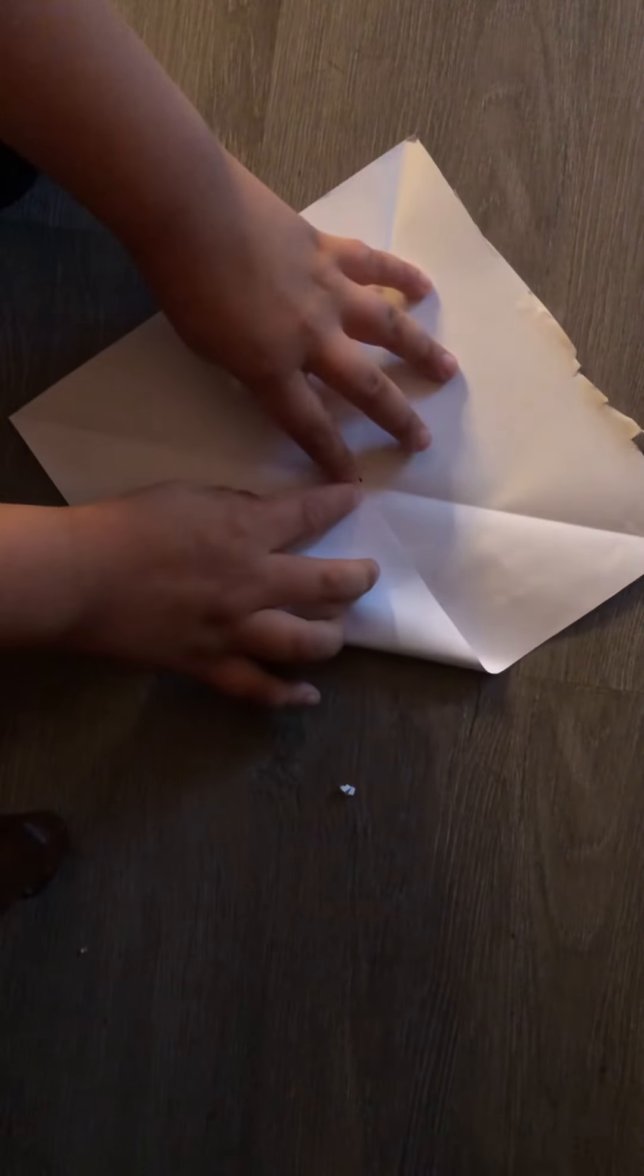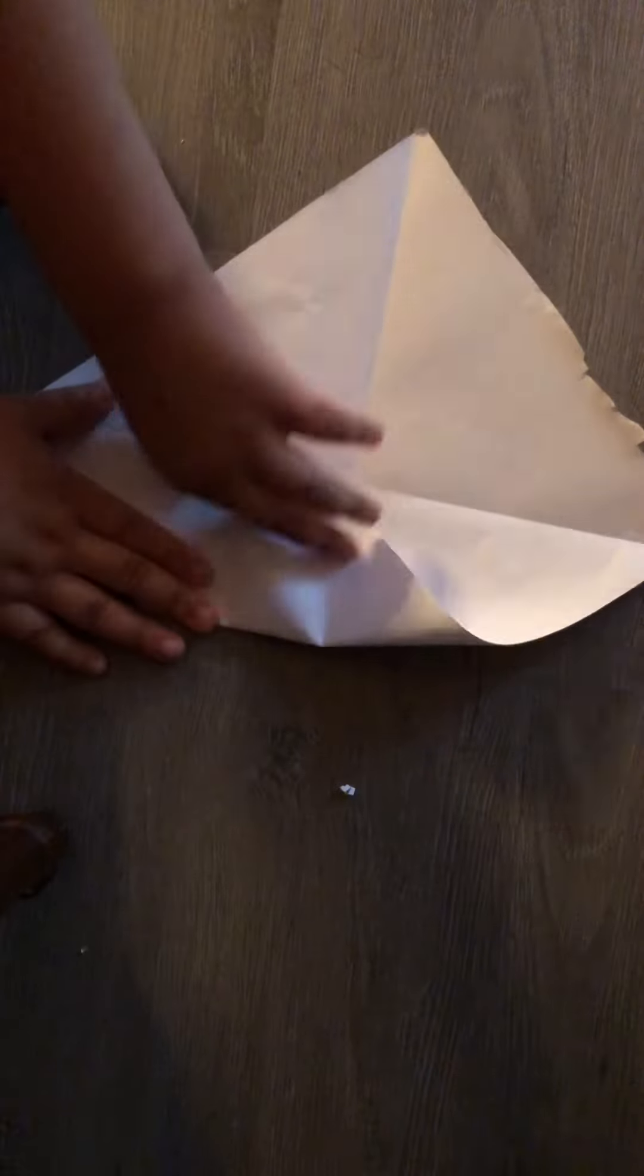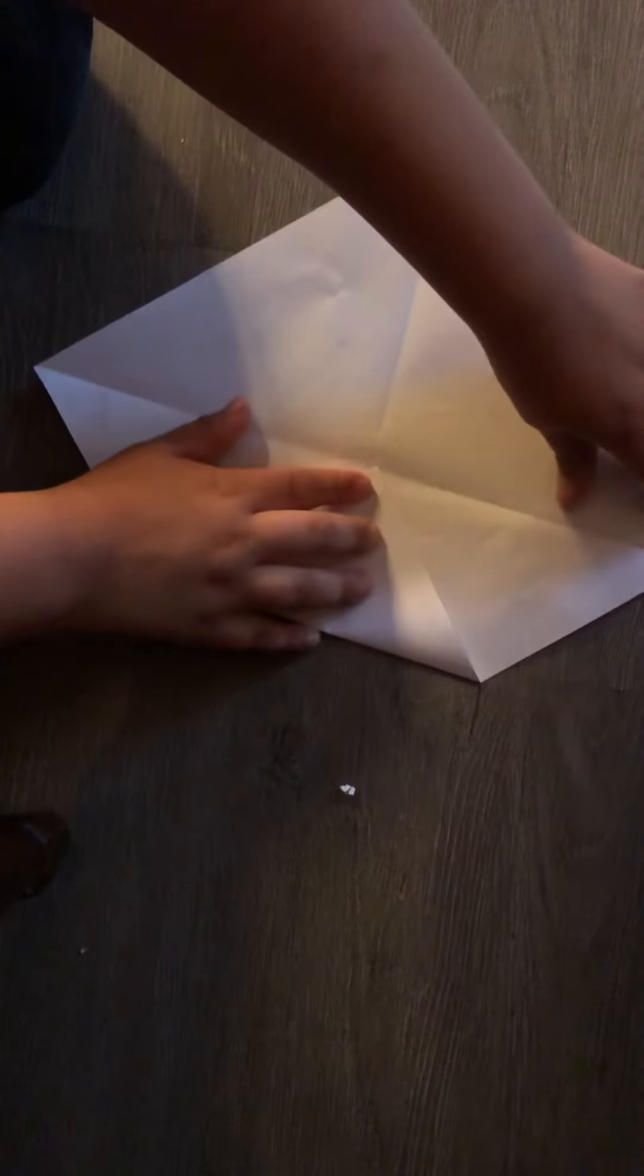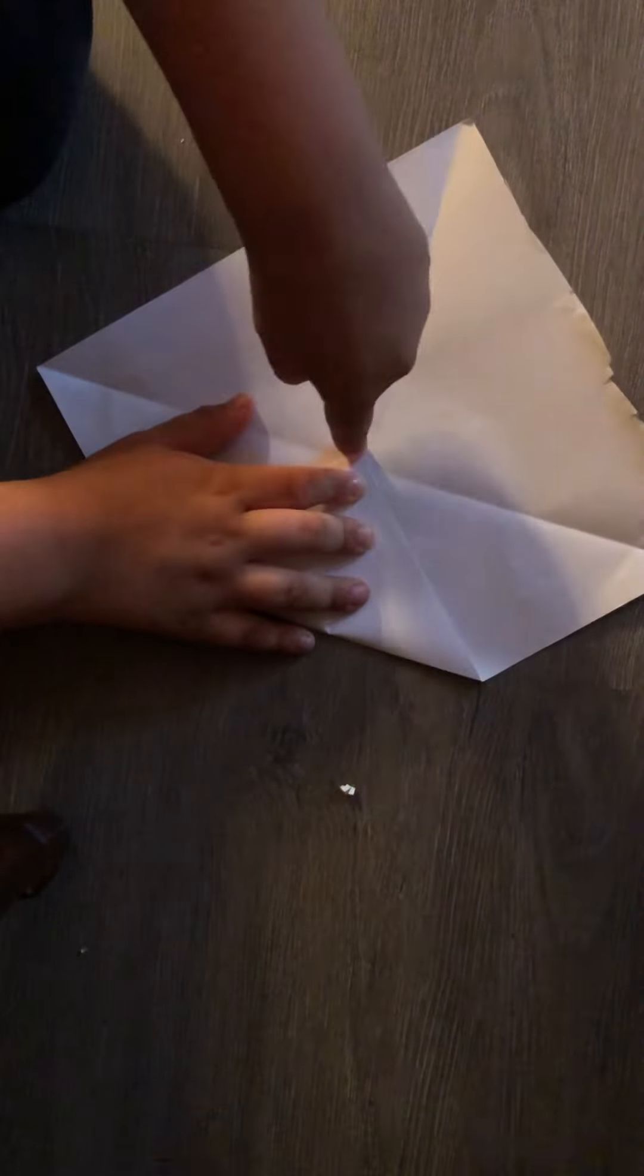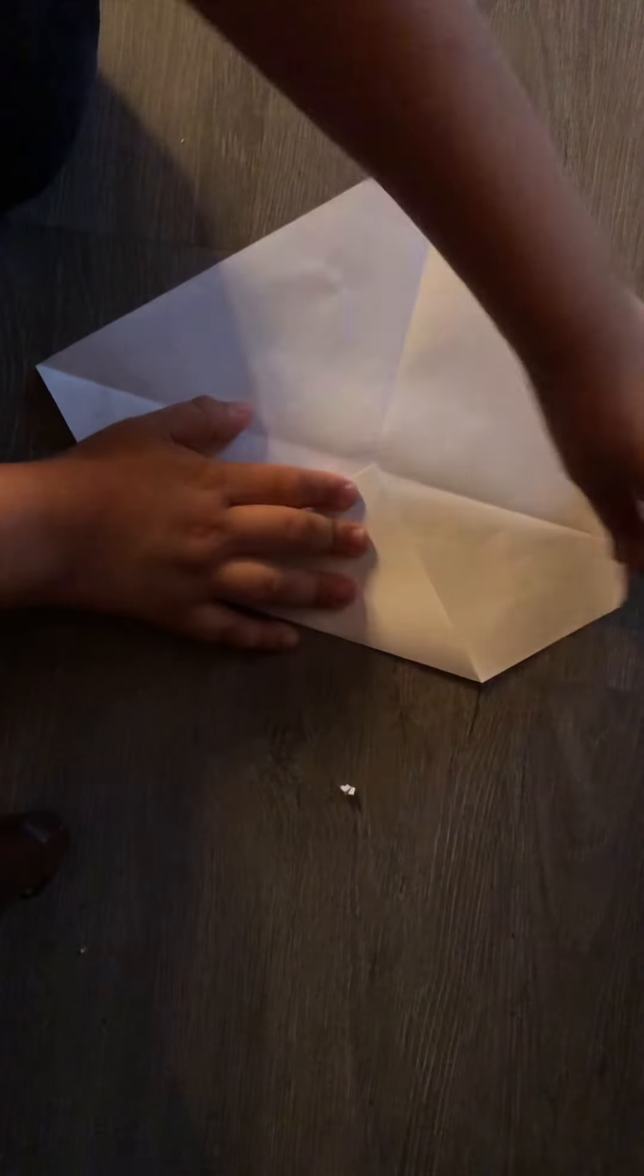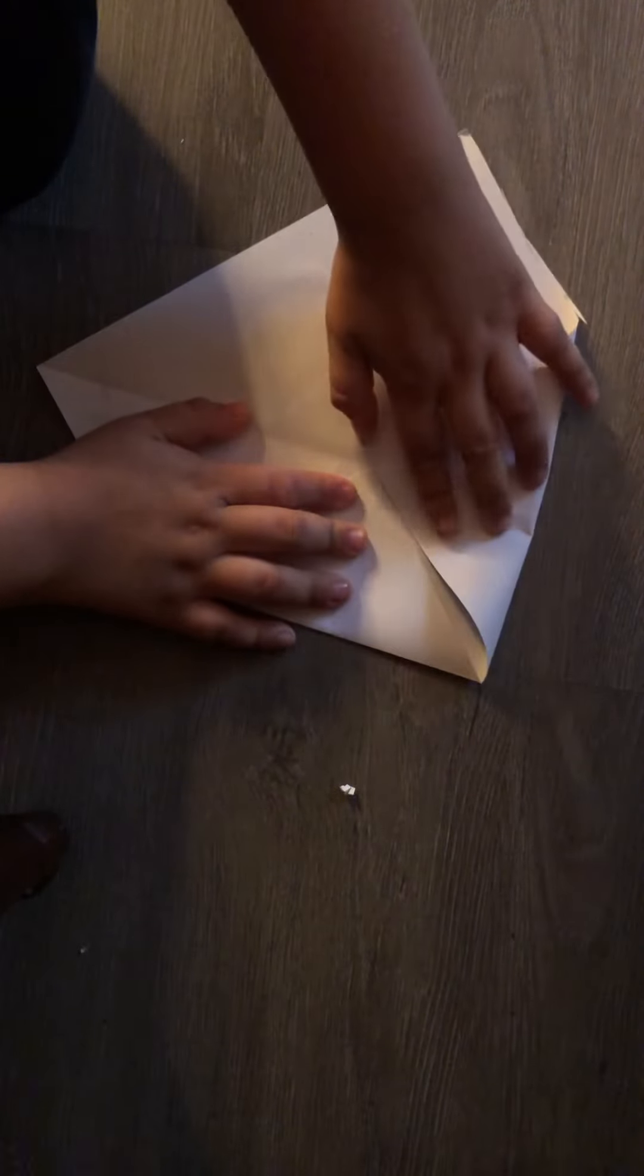Then what you're going to do is put all the corners into the middle dot right here. You're going to crease it, and then do that to all the other sides.